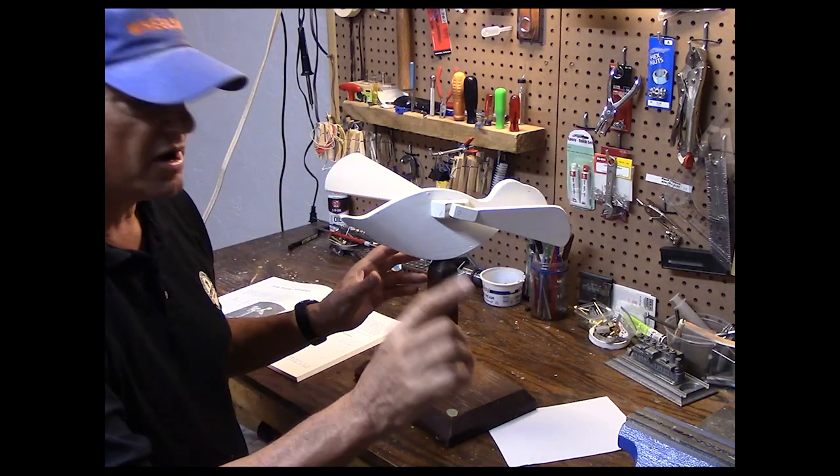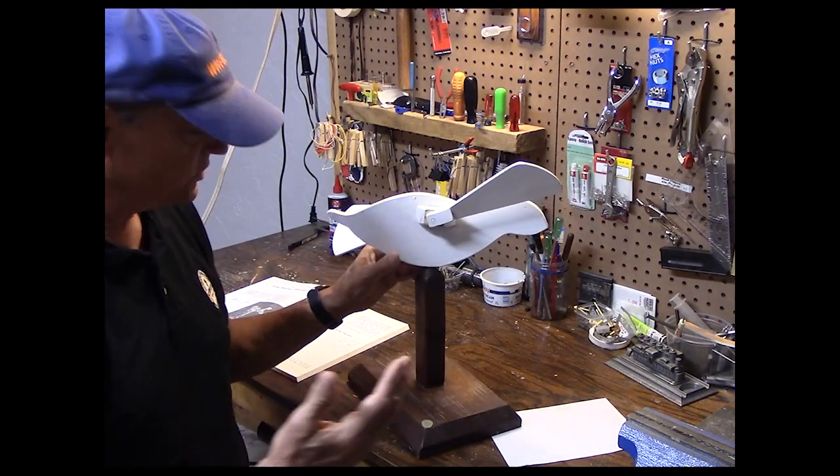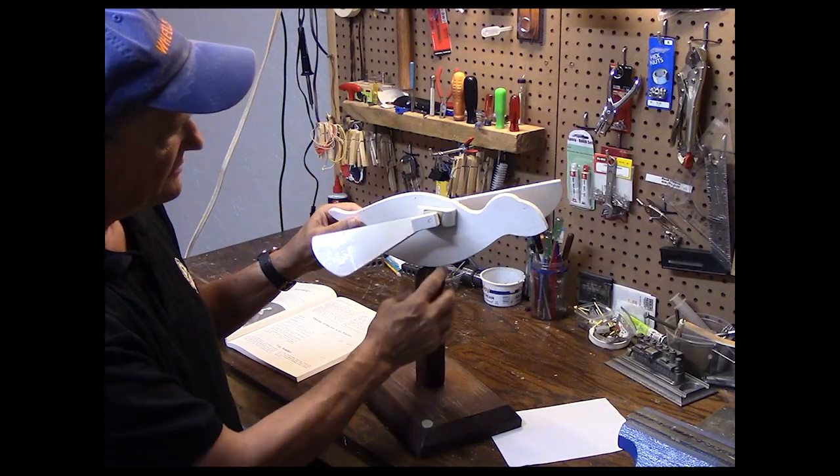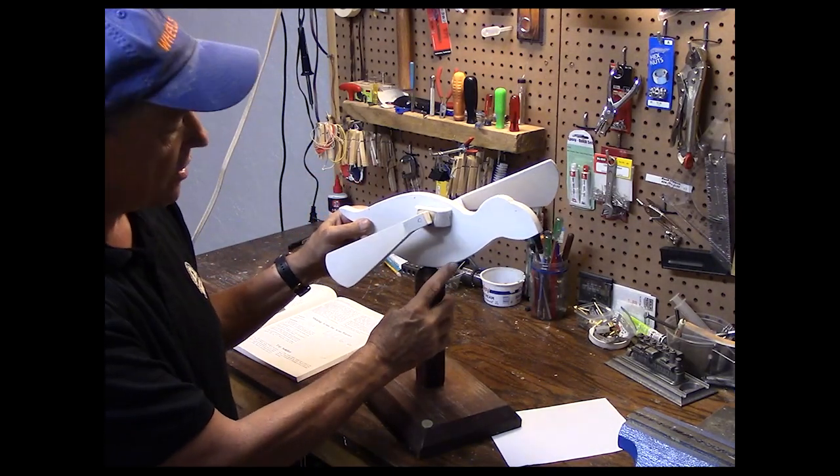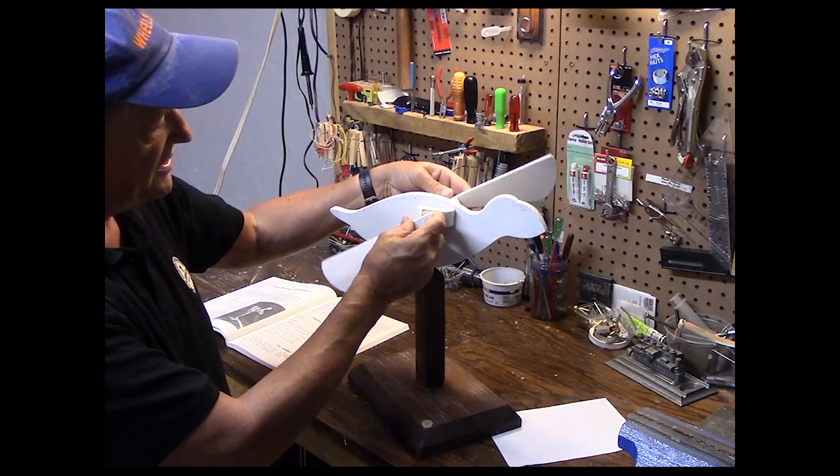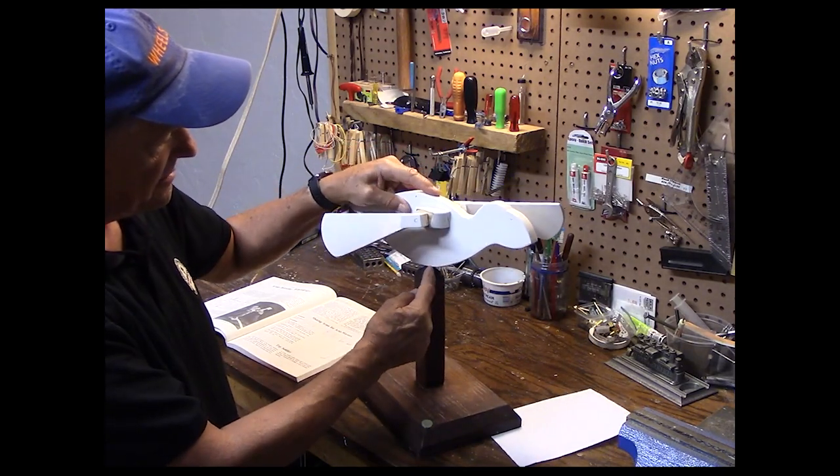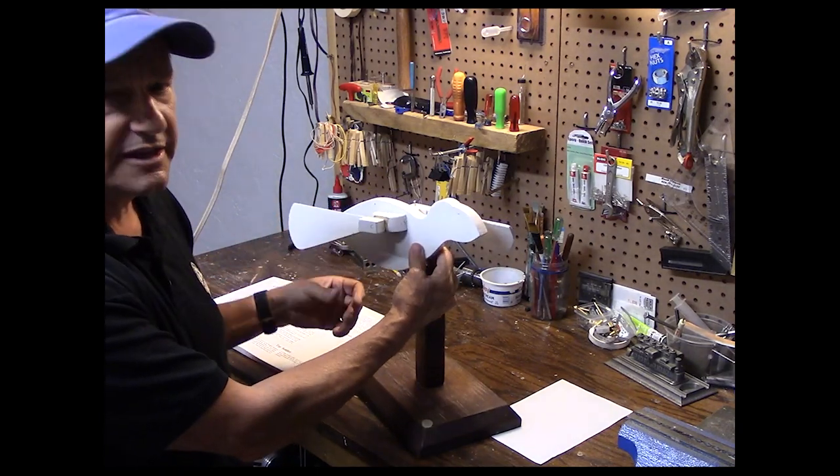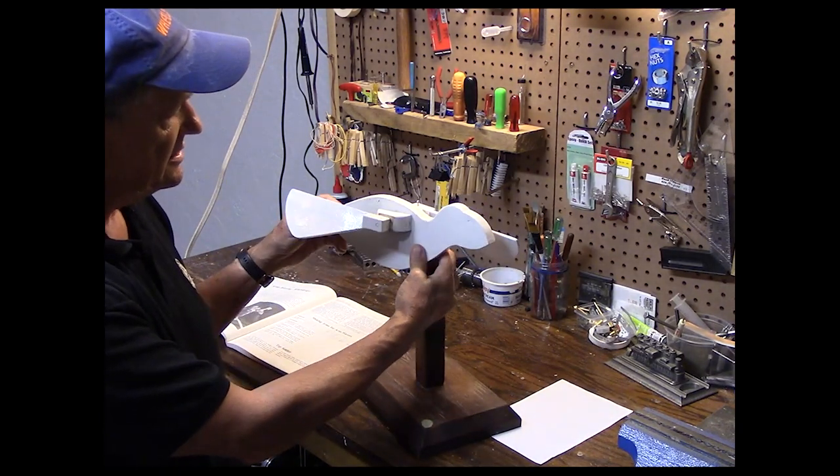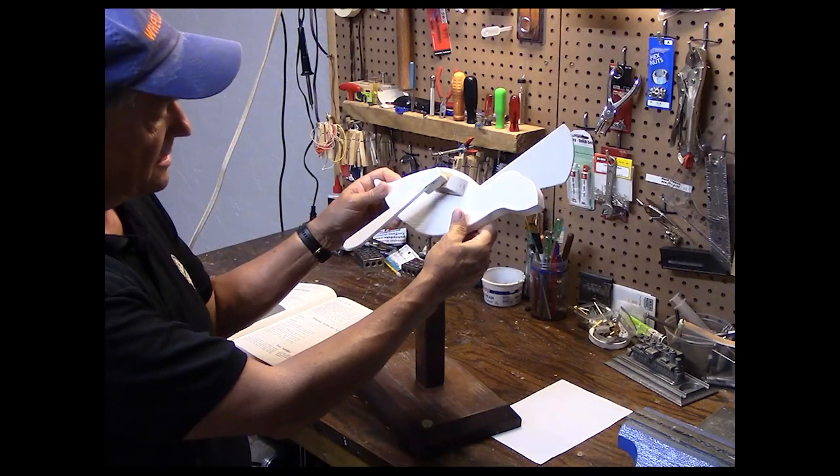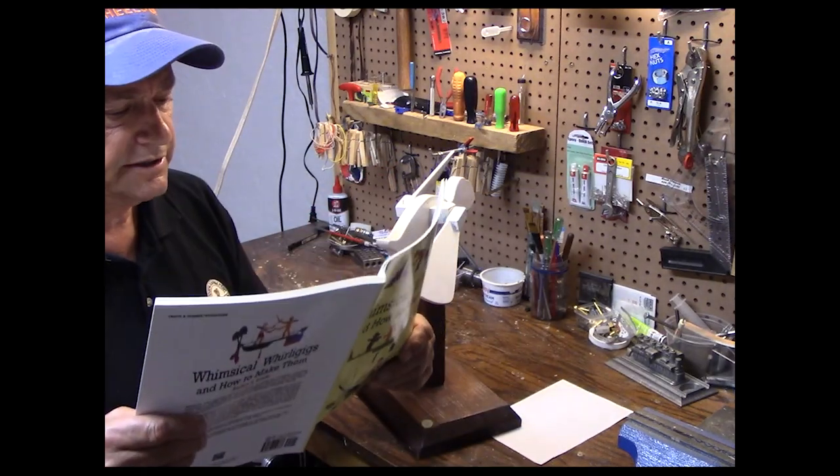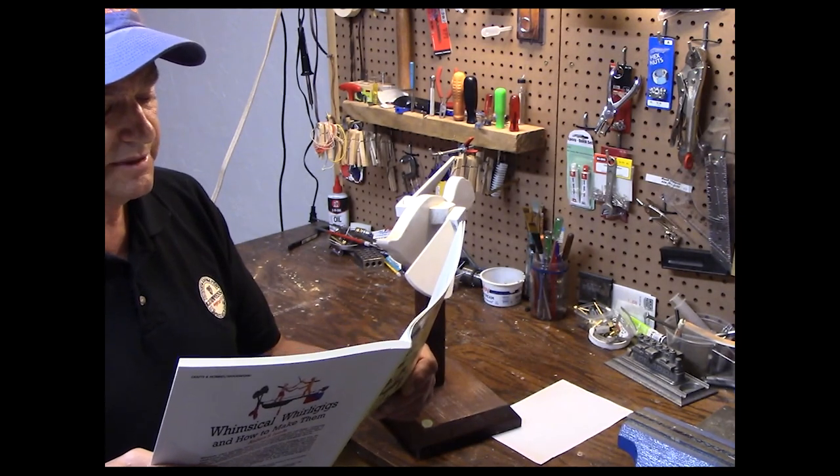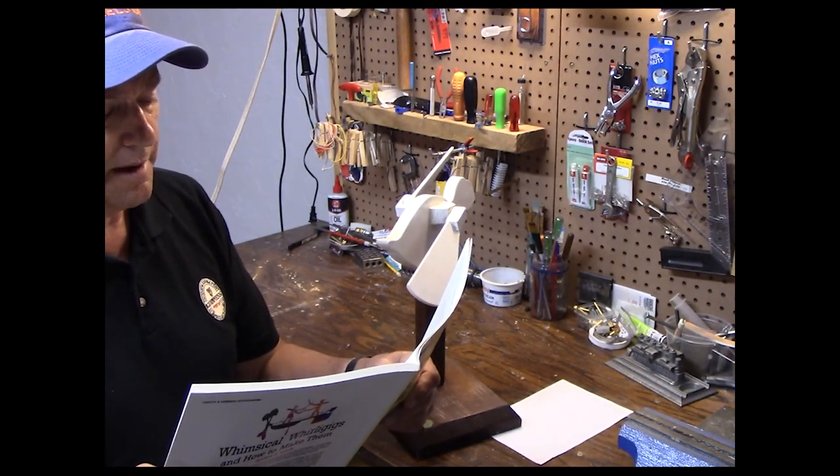The real tricky part of the arm-waving whirligig is the pivot point. Because if the pivot point is too far away from the axle of the wings, then the whirligig is just going to turn into the wind like this and the wings won't spin. So it's kind of tricky.